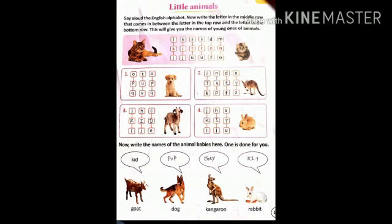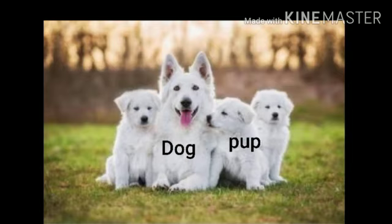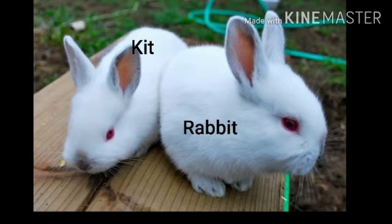Now, the next one. Dog. The young one of dog is called PUP, P-U-P. Now, the next one. Kangaroo. The young one of kangaroo is called Joey. At the last one, rabbit. The young one of rabbit is called KIT. And here are some of the pictures of animals with their young ones. This is goat with his young one KID. Dog with puppy. Kangaroo with joey. Rabbit with KIT. And cat with kitten.